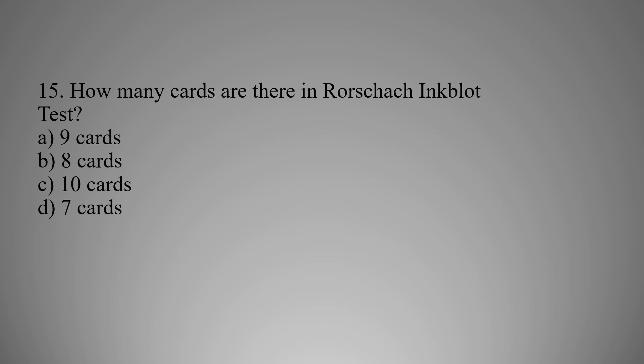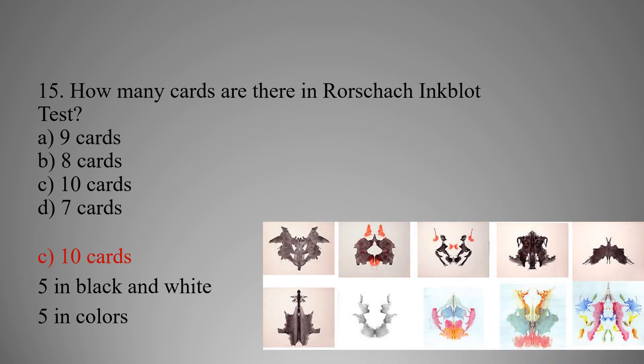MCQ number fifteen: How many cards are there in the Rorschach Inkblot Test? Option A: Nine cards, Option B: Eight cards, Option C: Ten cards, Option D: Seven cards. The right option is C — ten cards: five in black and white and five in different colors. These cards are used to assess the client's perception.